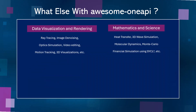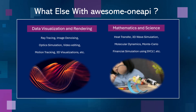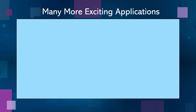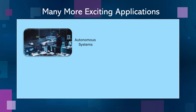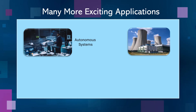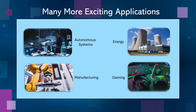Not only AI and ML, the Awesome OneAPI repo also provides 22 data visualization and rendering projects, as well as 31 projects simulating various mathematical models and scientific phenomena. Other miscellaneous projects in the Awesome OneAPI repo cover exciting use cases for autonomous systems, energy, manufacturing, and gaming domains.